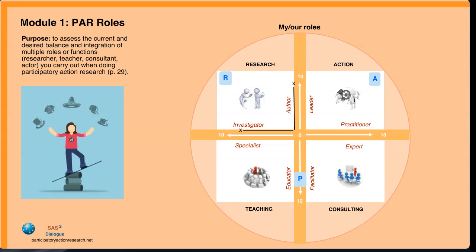Then use the upward arrow to mark the time and effort you spend communicating your findings through research papers and sole-authored or co-authored publications, again on a scale of 0 to 10. Mark the place where the two scores meet. The new square this creates is the place or function that research occupies in your work.